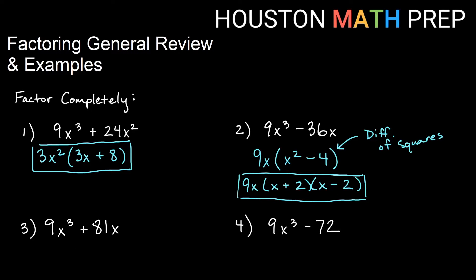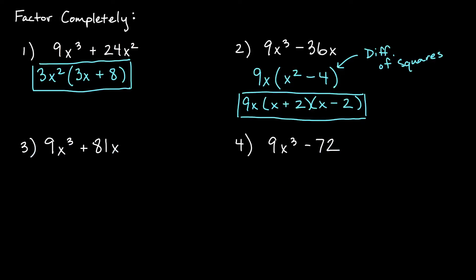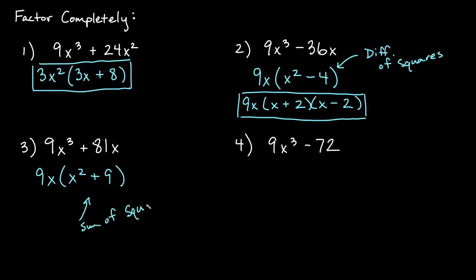Third one: 9x cubed plus 81x. 9 and 81 have a common factor of 9, and x cubed and x share an x. Factoring out 9x leaves x squared plus 9. This is a sum of squares, and a sum of squares will not factor. So we were able to pull out 9x, but x squared plus 9 cannot be factored further — a little different from a difference of squares, which does factor.